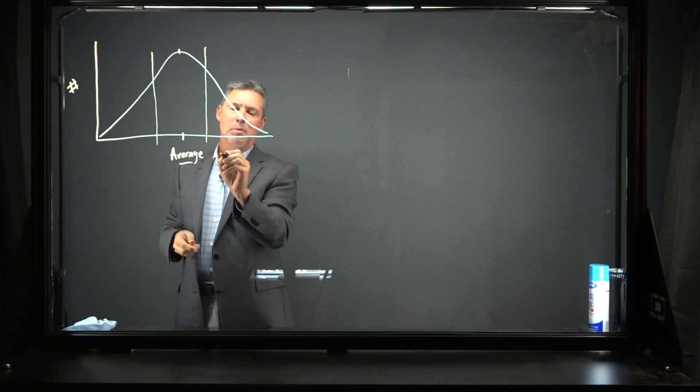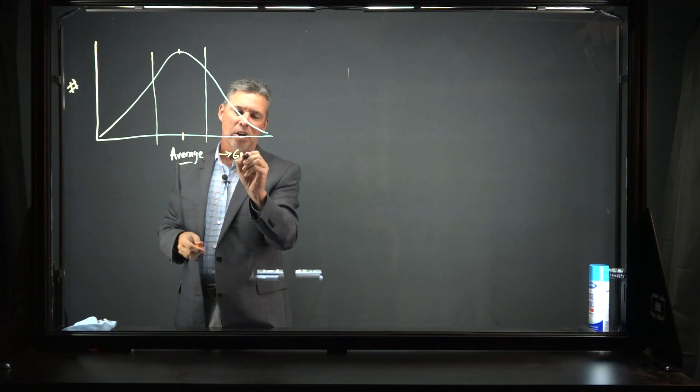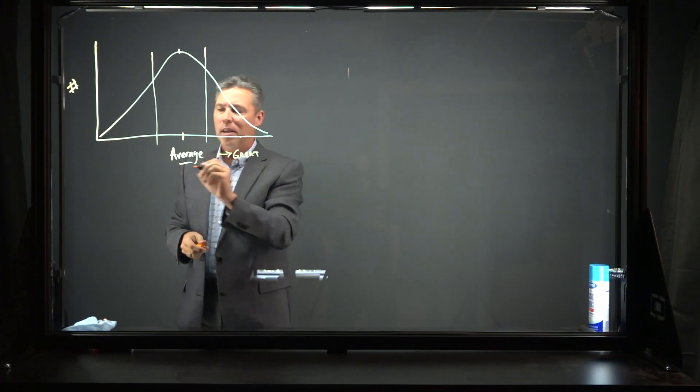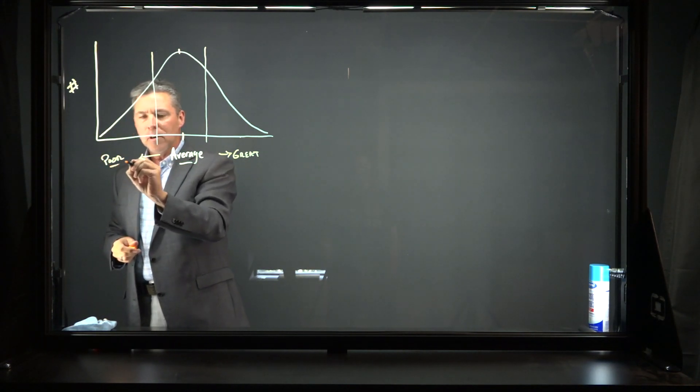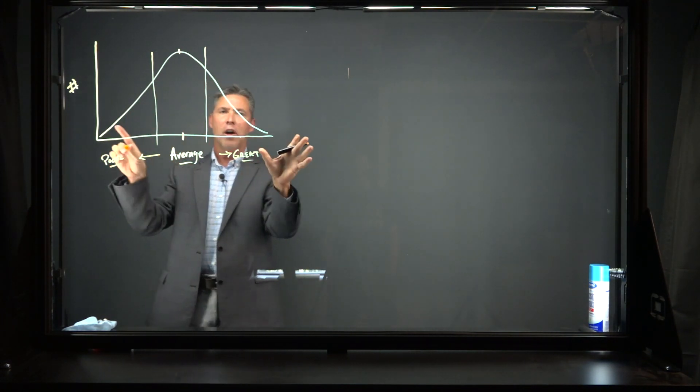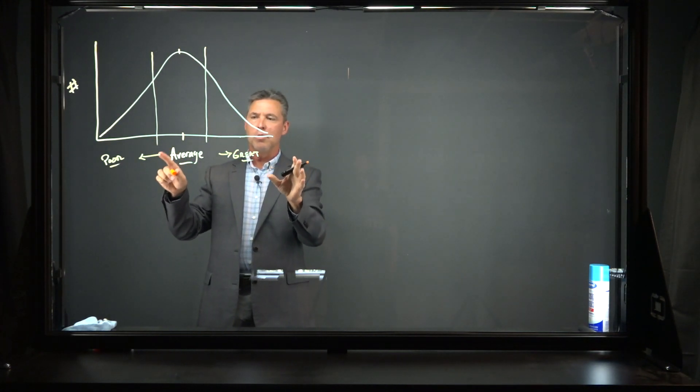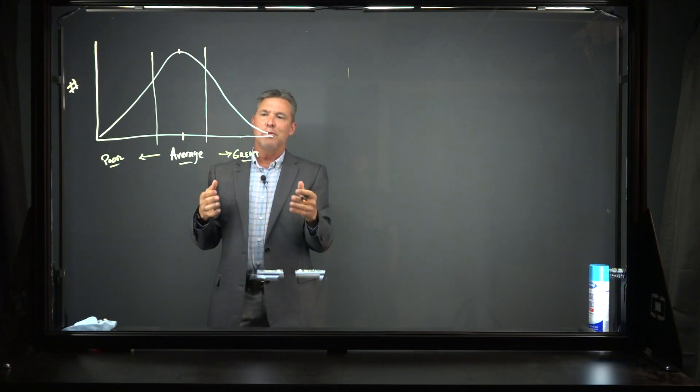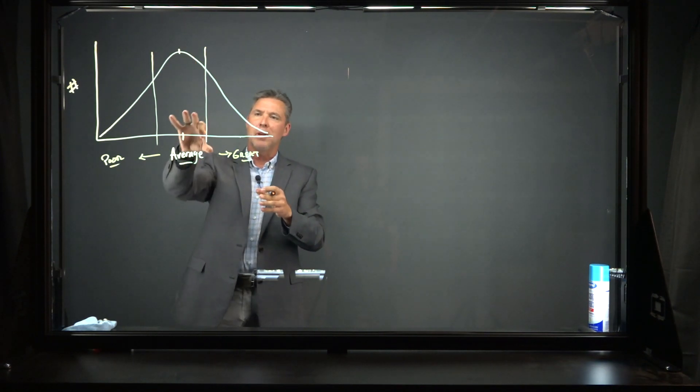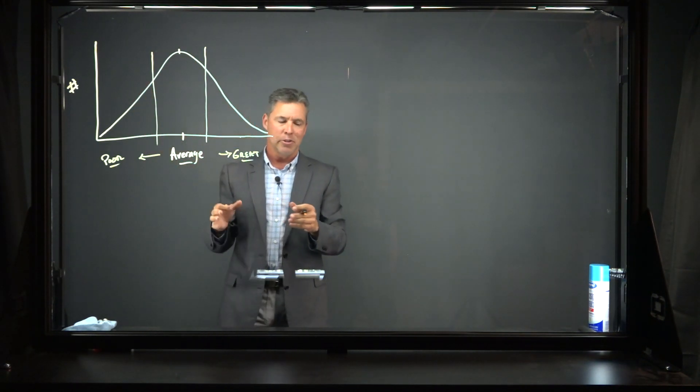So if this is the average immune response, over here we've got a great immune response, and over in this direction we have a poor immune response. Those are our ranges for the immune response. We all respond this way to the virus itself or to the vaccine. Most people here, some people outstanding, some people not so good.